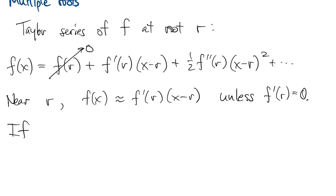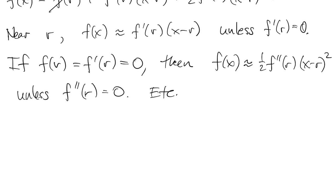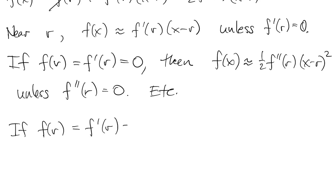If that happens, then the next term becomes the most important term, the largest term. So the function sort of looks quadratic near the root. Unless, of course, that one's also zero, you see where this is going. So this leads to a definition.